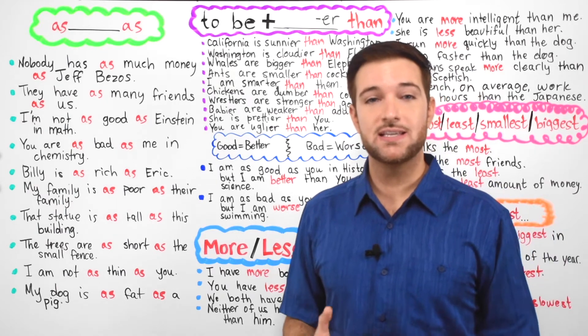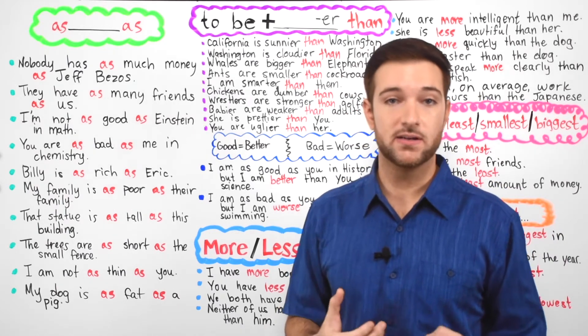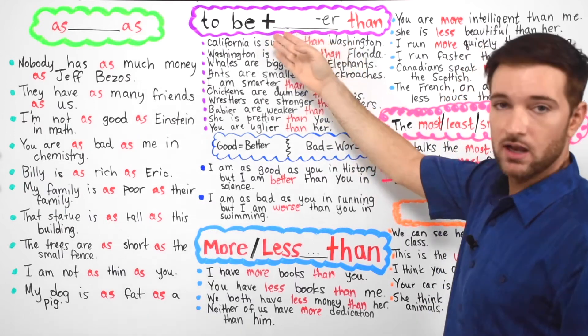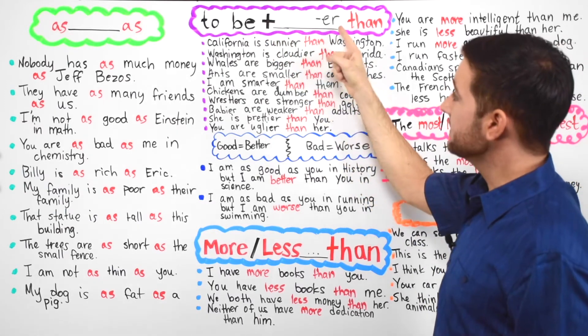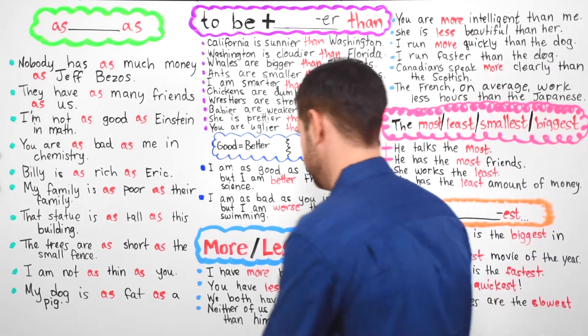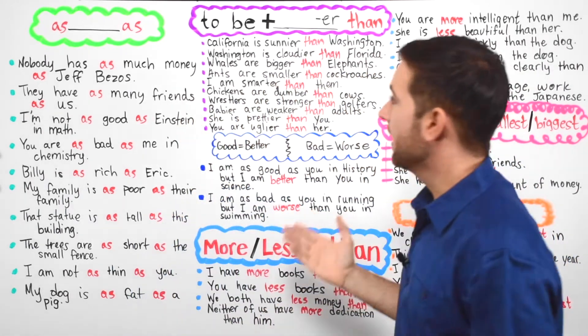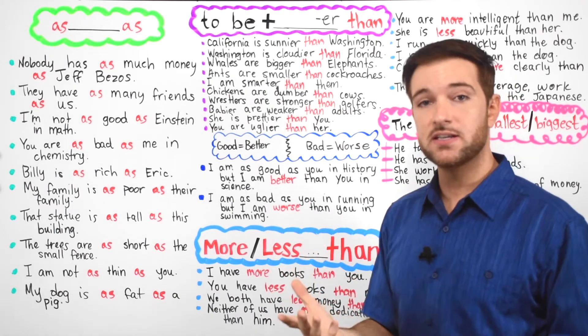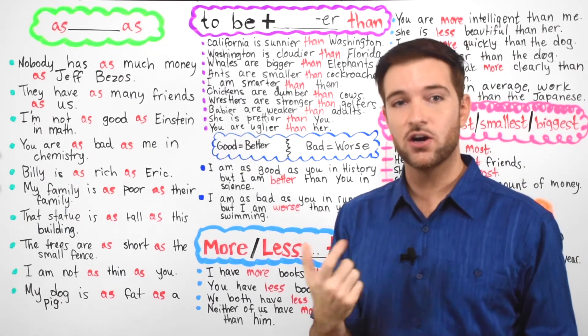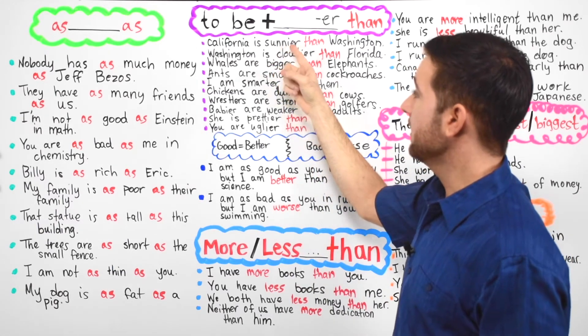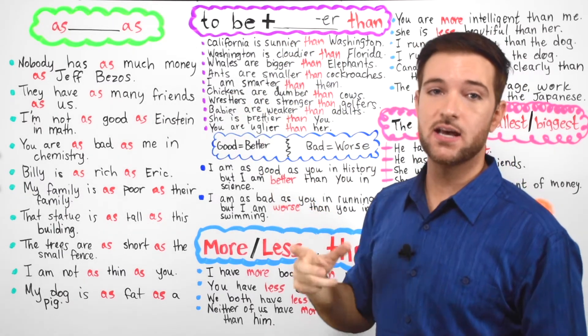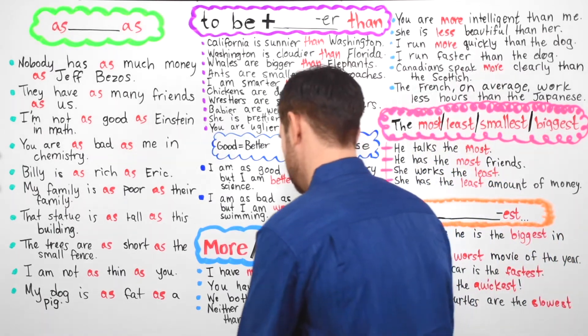So now guys, we're going to look at comparisons that show something to be more or less in comparison to something else. The format that we're going to use is using the verb to be plus we have like a blank space. So you put the word here plus er then. For example, California is sunnier than Washington. There is more sun. Now you'll notice that. I'll show you. California is sunnier than Washington.